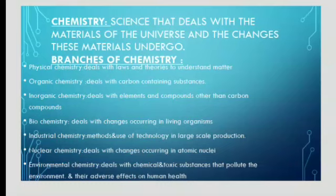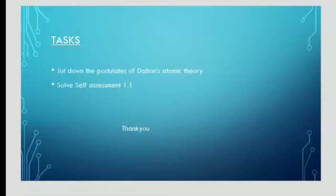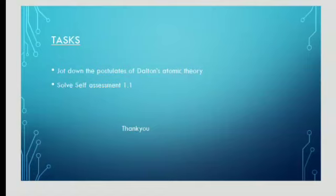This topic is completed here. I would like to give you a few tasks to complete next week. First, you have to jot down the postulates of Dalton's atomic theory — you need to note and remember all the points and it's better to write them on a page. Then, solve example 1.1 on page number 9 by yourself without getting help from the solution given at the end; then you can check your answers. Finally, solve self-assessment 1.1 by yourself and we will discuss it once schools are open. I hope all the things are clear to you. Thank you and take care.